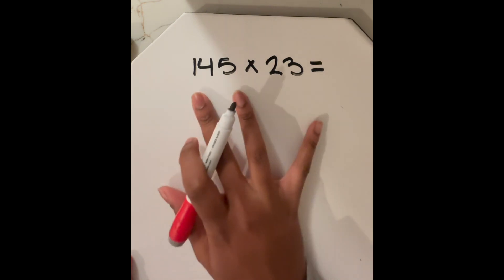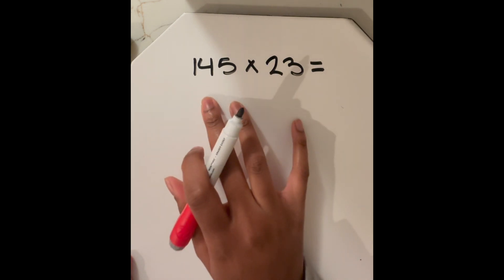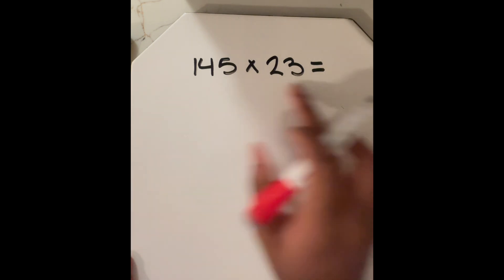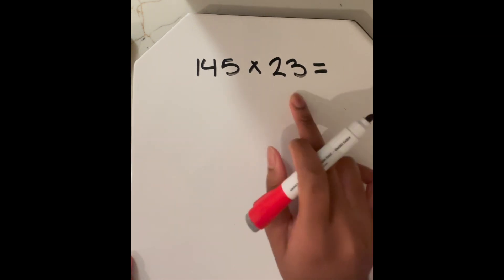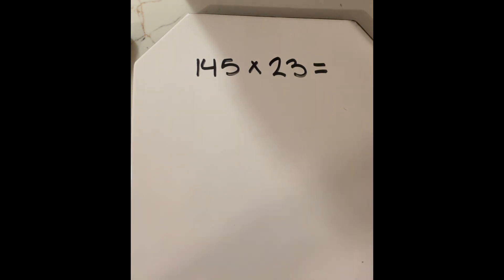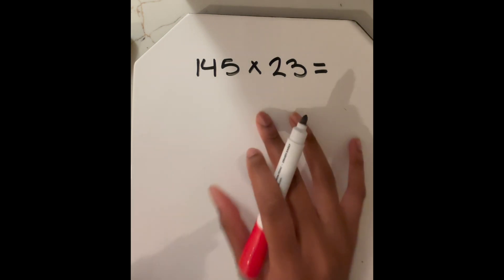So once again, when we see a problem like this written out in horizontal format, so straight across 145 times 23 like this, it's harder to really figure out and evaluate by just looking at it, unless of course you're using a calculator or have wicked mental math skills.